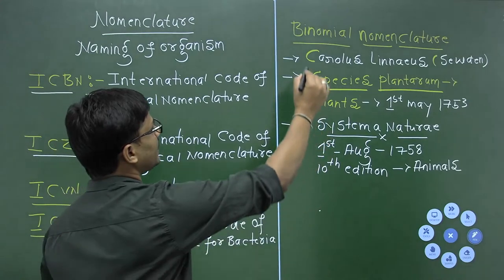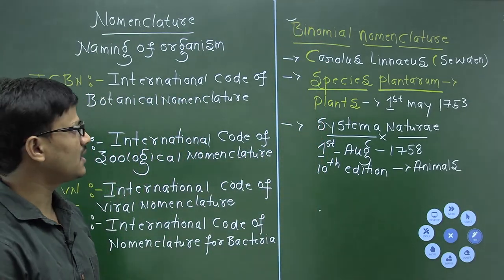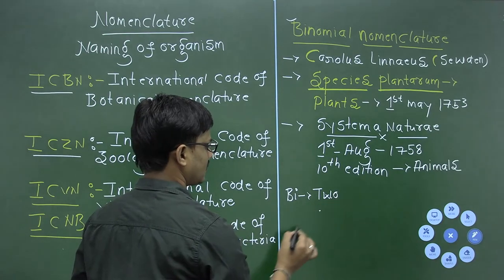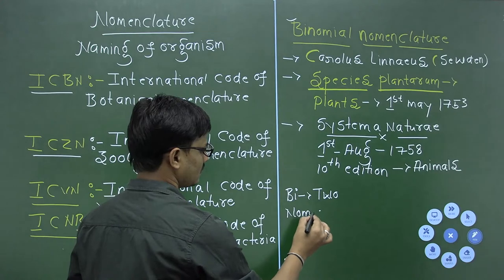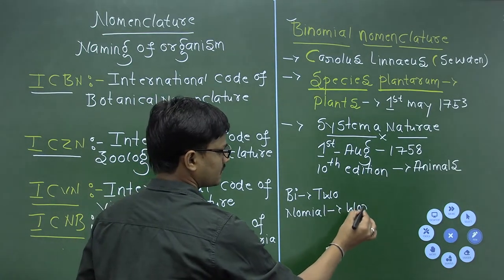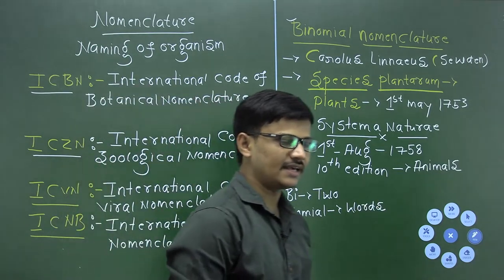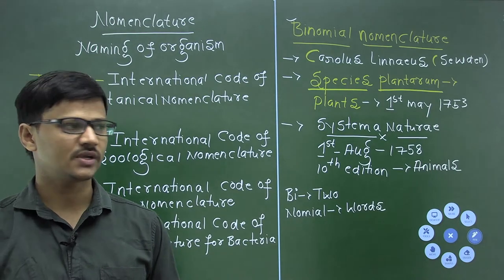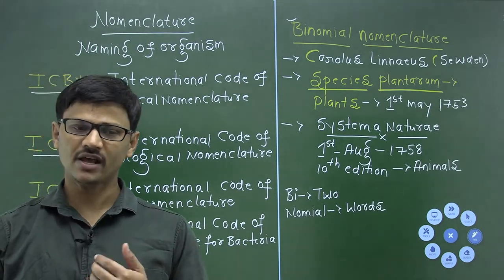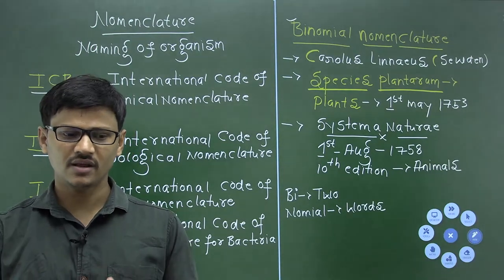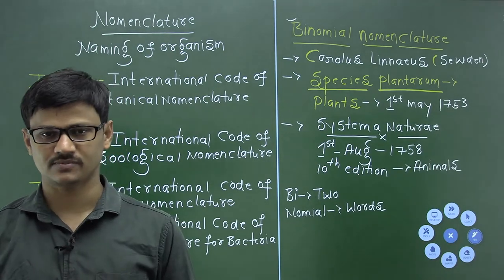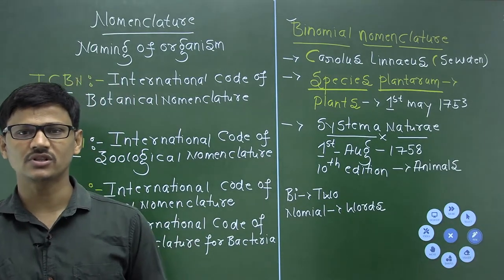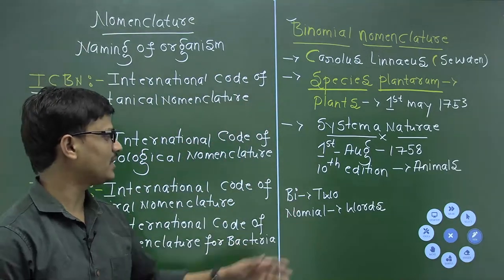Why is it called binomial nomenclature? 'Bi' stands for two and 'nominal' means names or words. According to Carolus Linnaeus, the scientific name of each organism should contain two words. He argued that whenever a scientific name is given to any plant or animal, that name should consist of two words — the first word is the genus name and the second word is the species name. Since scientific names contain two words, it is called binomial nomenclature.